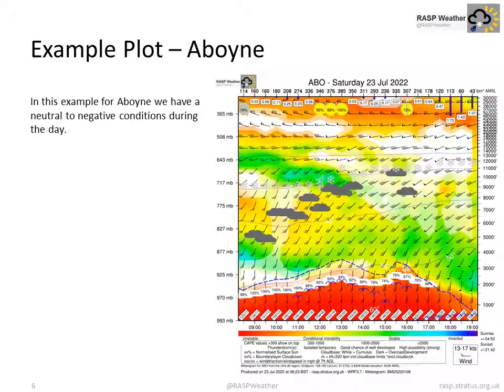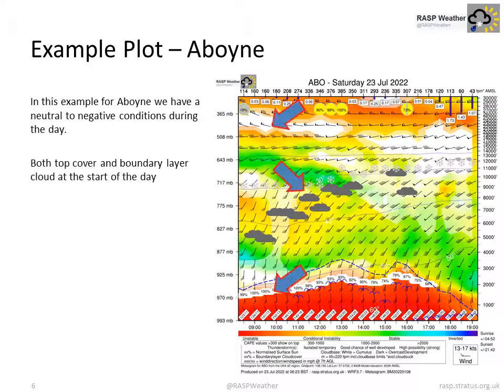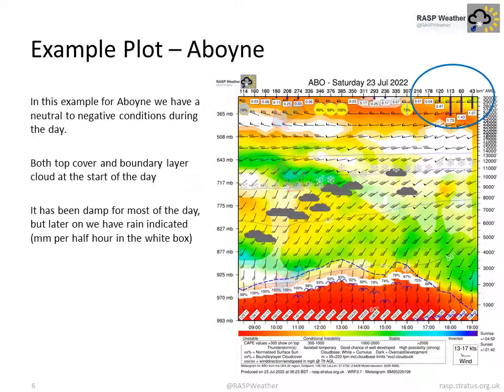Looking at a Boyne — this is a particularly negative day on the basis of some rain and other factors. Both top cover and boundary layer cloud are present at the start of the day. It has been damp for most of the day, but later on rain is indicated, shown as millimetres per half hour in the white boxes.